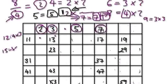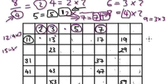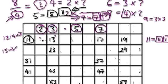Now the next one on the list would be 11. You can't break up the 11 — the only way to break up 11 is by visualizing it as 11 times 1, which is itself and 1. So 11's a prime.